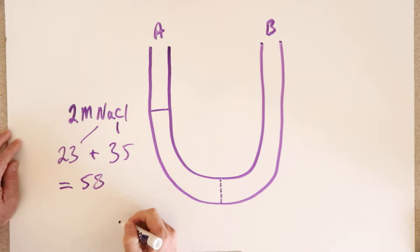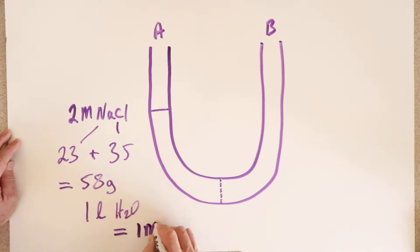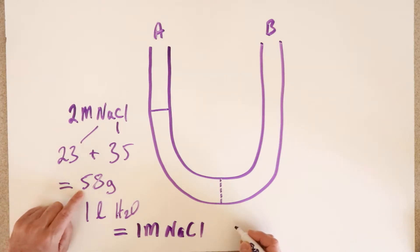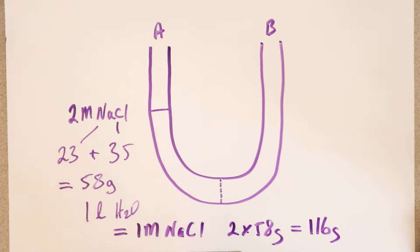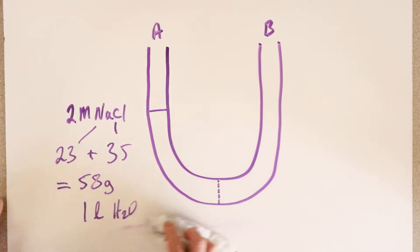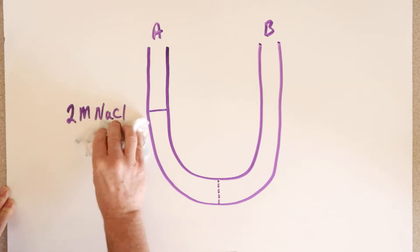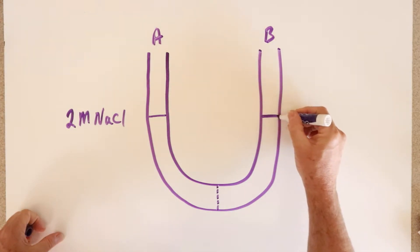To make a one molar solution, I measure out 58 grams of sodium chloride and dissolve it in one litre of water. For a two molar sodium chloride solution, I take two times 58 grams, which equals about 116 grams, and dissolve it in one litre. Now on side B I'm going to put a much more concentrated sodium chloride solution.